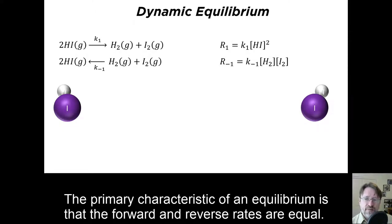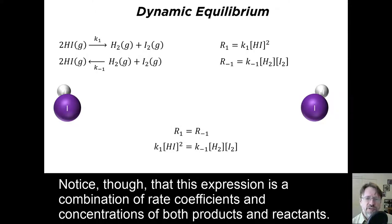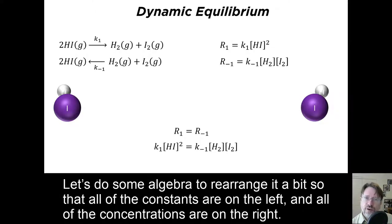The primary characteristic of an equilibrium is that the forward and reverse rates are equal. Notice, though, that this expression is a combination of rate coefficients and concentrations of both products and reactants. Let's do some algebra to rearrange it so that all of the constants are on the left and all of the concentrations are on the right.